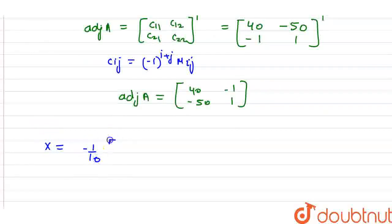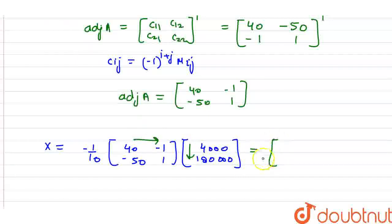Now X equals minus 1 by 10 times [40, -50; -1, 1] times [4000; 180,000]. We multiply the matrices. Taking minus 1 by 10 as a common factor and simplifying the multiplication.